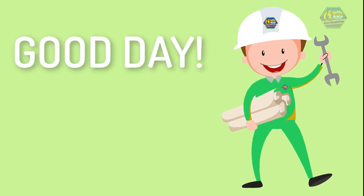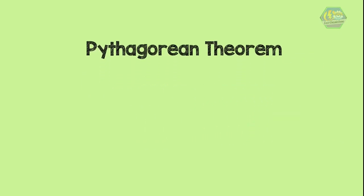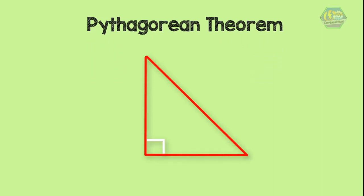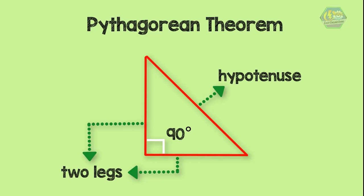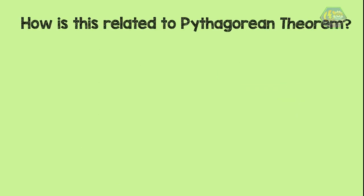Hello, it's Easy Engineering. For today's topic we are going to talk about the Pythagorean theorem. Before we proceed, let's draw a right triangle. A right triangle is a triangle in which one angle is a right angle, which means 90 degrees. It also consists of two legs and a hypotenuse. The hypotenuse is the longest side of the right triangle.